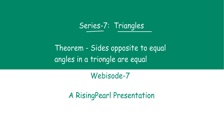In today's webisode, we are going to look at a theorem and we are going to find out how to prove this. The theorem is: sides opposite to equal angles in a triangle are equal. That is, sides which are opposite to equal angles in a triangle are equal. So let us find out how we can prove this.